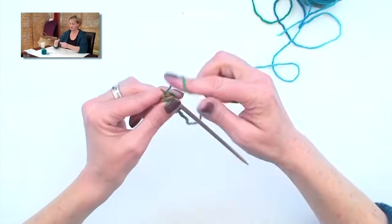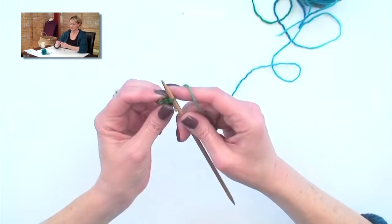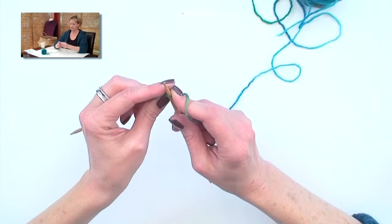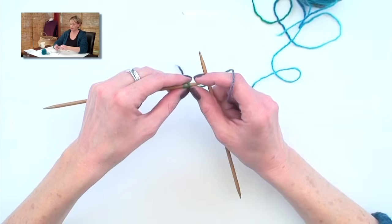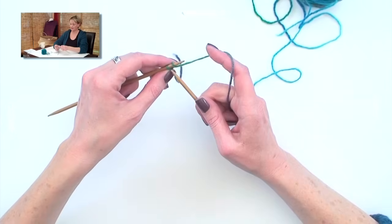I work a knit stitch, twist it around, and put it on the left needle, sliding it off the right. So now we have two stitches on the left needle.